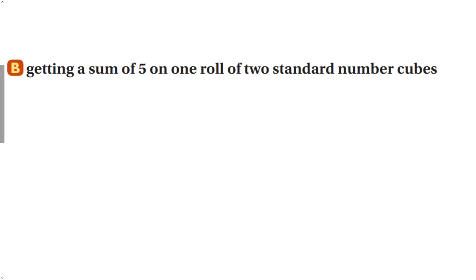For part B, getting a sum of 5 on two standard number cubes. Now we're going to have to think about all the different ways that this is possible. If I think about if I roll, we can think of different combinations of ways to make 5. That would be a 1 on the first dice, a 4 on the second, right? That adds up to 5. With a 2 on the first dice, that would be a 3 on the second. With a 3 on the first dice, that would be a 2 on the second. And with a 4 on the first dice, a 1 on the second.